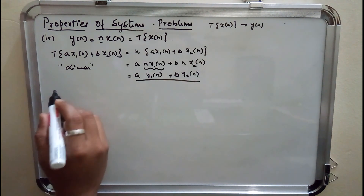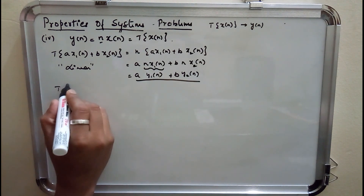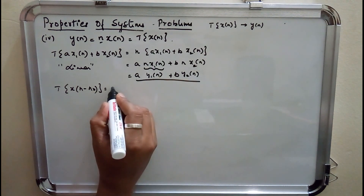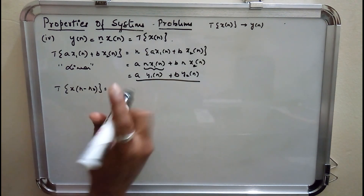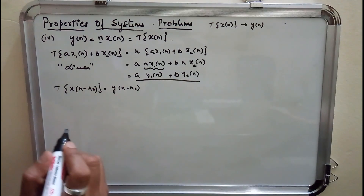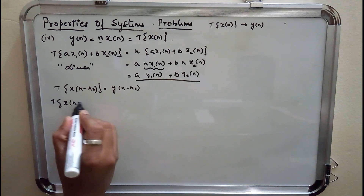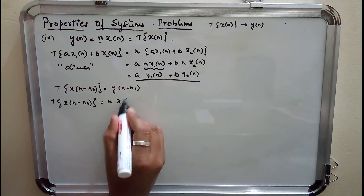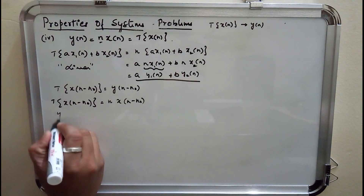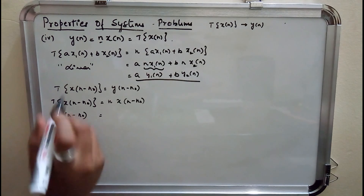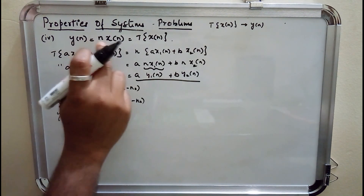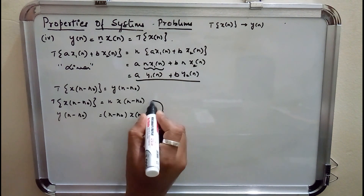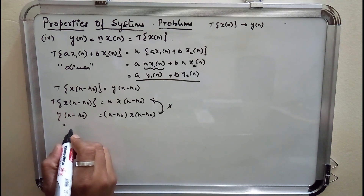The second property is time invariance. It states that if there is a shift in the input by an amount n₀, there should be an identical shift at the output as well. Taking the left-hand side: transformation on x(n − n₀) gives n·x(n − n₀). But on the right-hand side, y(n − n₀) means replacing n by n − n₀, giving (n − n₀)·x(n − n₀). These two are not the same, hence the system is time variant.